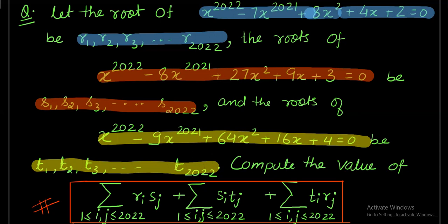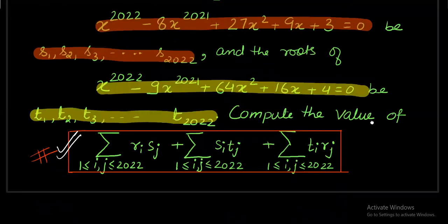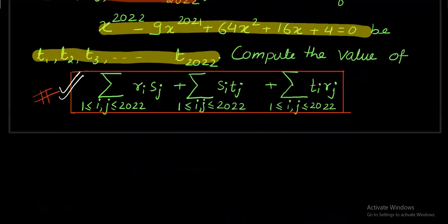Finally the question says that I need to calculate the value of this box which is sum of three sigmas: sigma of r_i times s_j plus sigma of s_i times t_j plus sigma of t_i times r_j, where 1 less than or equal to i, j less than or equal to 2022. When you look at the question, the rest is all information.